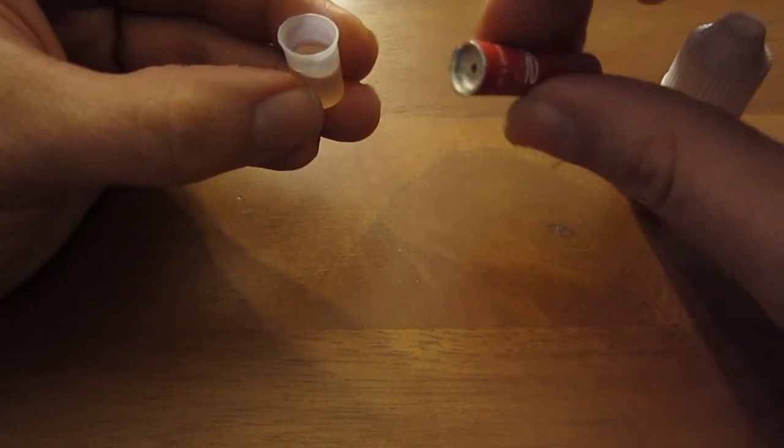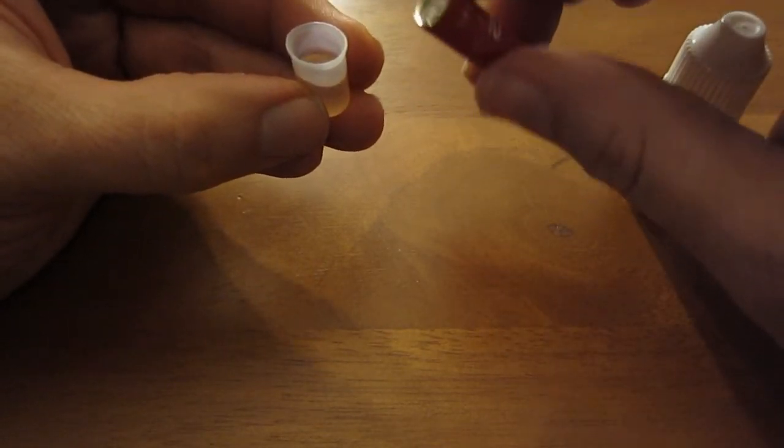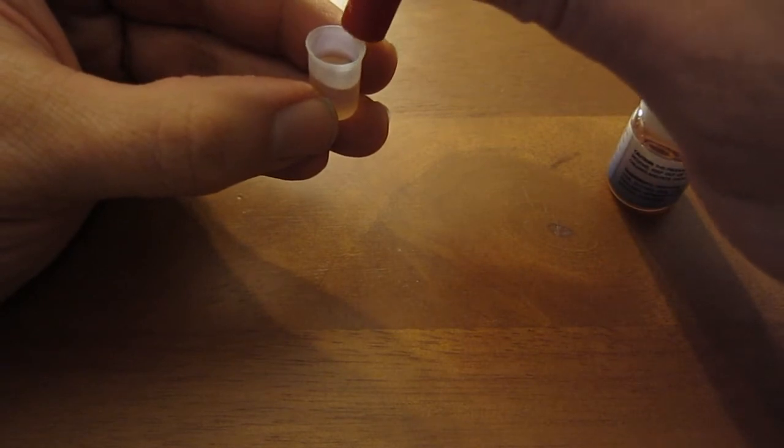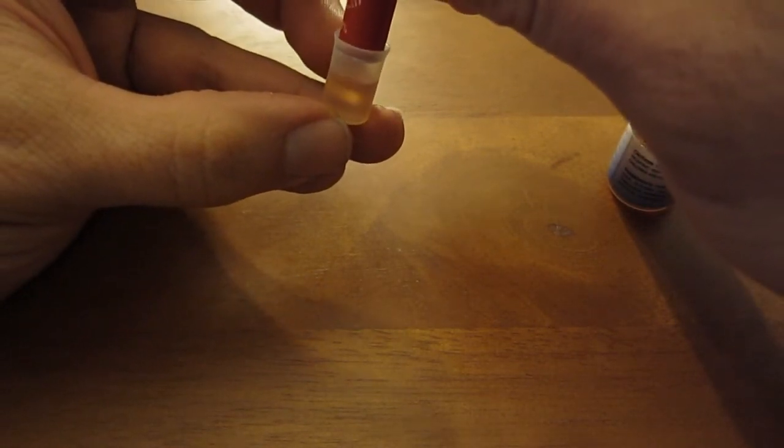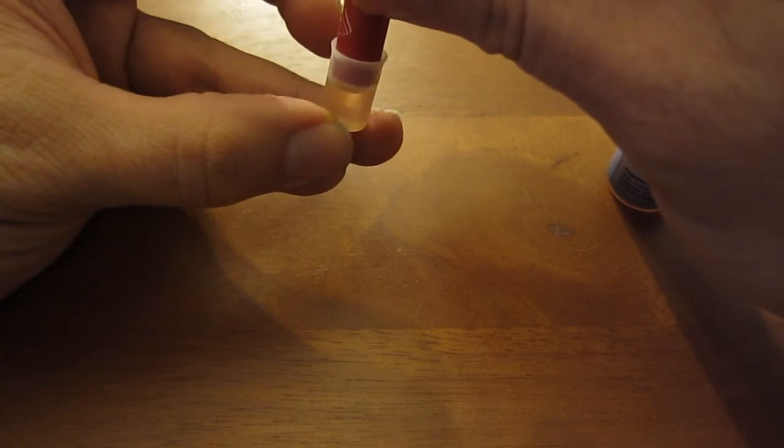So now what you're going to do is you're going to take this, and you're going to put the metal side down. And you're just going to put this in here, and you're going to do it slowly. So just real slow, just press it right down in here.